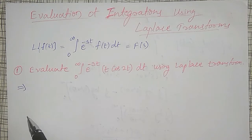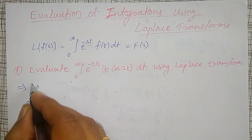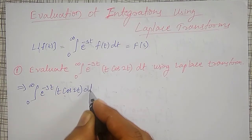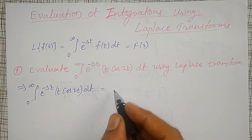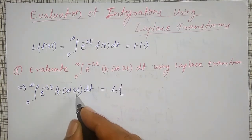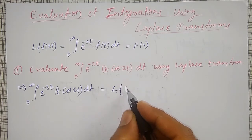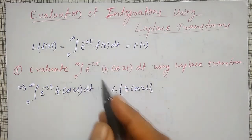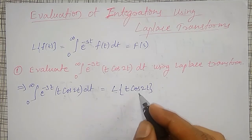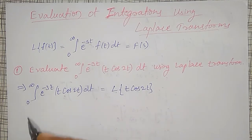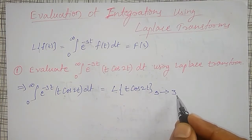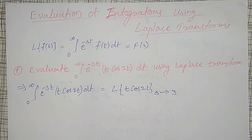So I can write the given integration from 0 to infinity of e^(-3t) · t·cos(2t) dt, using the definition of Laplace transform, as the Laplace transform of f(t) = t·cos(2t). After solving, I get a function of s, but s equals 3 here. Therefore, s is replaced by 3 in the final answer. Now I have to find the Laplace transform of t·cos(2t) with s replaced by 3.